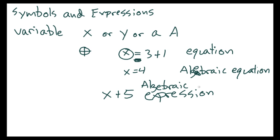An algebraic expression is when it has a variable but no equal sign. So to summarize: if it has an equal sign, it's an equation; if it has a variable, that makes it an algebraic equation. If it's just an expression with no equal sign but has a variable, then it would be an algebraic expression.